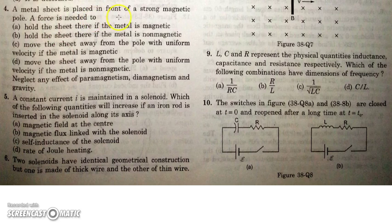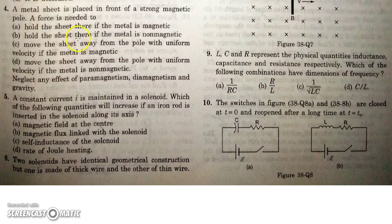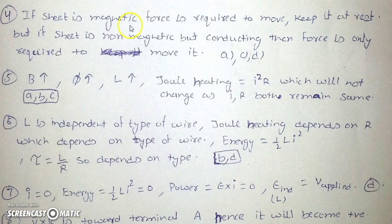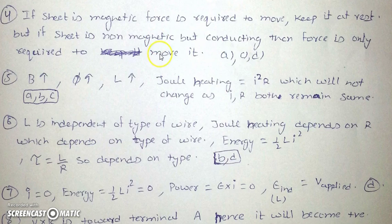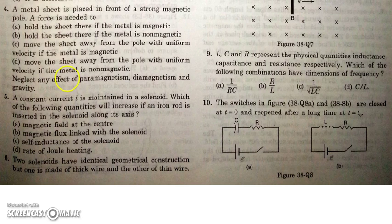In the next question, a metal sheet is placed in front of a strong magnetic pole. If the sheet is magnetic, a force is needed both to hold it at rest and to move it. If it is non-magnetic, no force is required to hold it, but as we move the sheet there will be induced EMF and forces due to induction. So even if it is non-magnetic, force is required to move it.